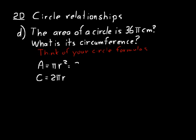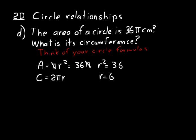Set pi r squared equal to 36 pi. We can solve for the radius: cancel pi from both sides and we get r squared equals 36. What times itself equals 36? That's 6. So the radius equals 6.